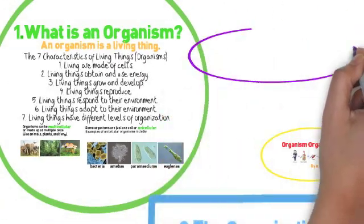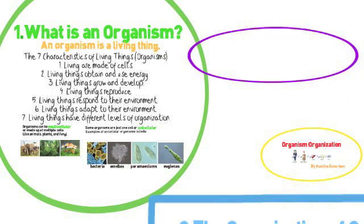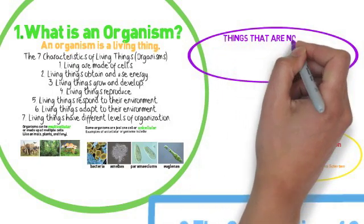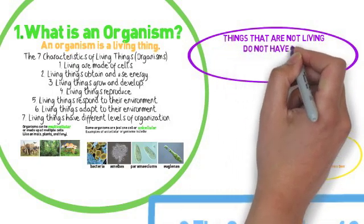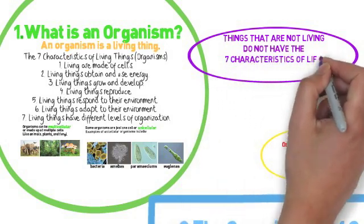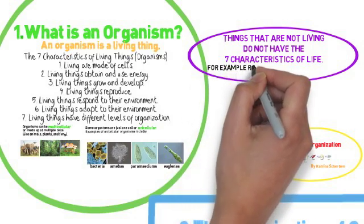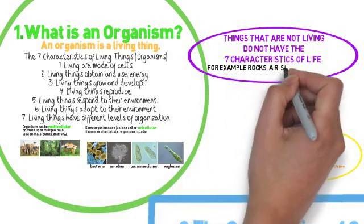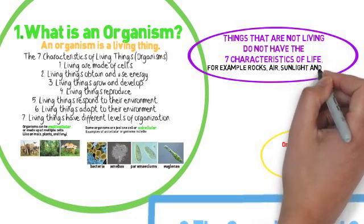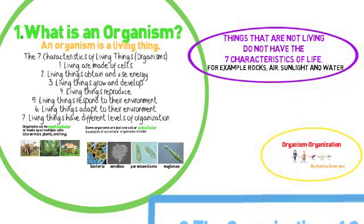So what makes them living? Again, all of these things, no matter if they're a singular cell or they are as gigantic as an elephant, they have all seven characteristics. If it only has six of these characteristics, it is not living. And you can think of some things that aren't living, like rocks, air, sunlight, water, even fire.